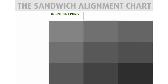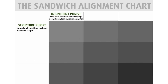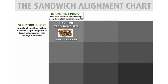We've got the ingredient purist — must have classic sandwich toppings: meat, cheese, lettuce, condiments, etc. And the structure purist — sandwich must have a classic sandwich shape: two pieces of bread, baked product with toppings in between. A hardline traditionalist will say a BLT is a sandwich. No one is debating that — that is the traditional sandwich.